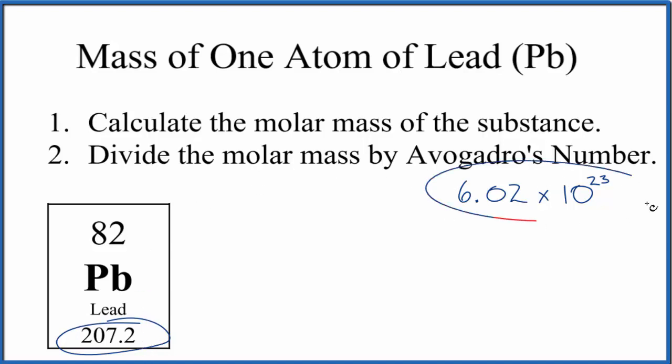We're going to divide that by Avogadro's number. That gives us the mass of one atom of lead. Since this is the average atomic mass, it'll be the mass of an average lead atom. Let's give it a try.